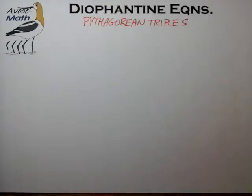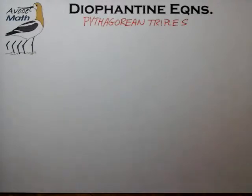Welcome back to Avocet Math. In this last few video lectures, we're going to explore a simple and elegant theory for generating Pythagorean triples. That's essentially a non-linear type of Diophantine equation that's quite useful and shows up in some of the AMC and U.S. USAMO level of testing.